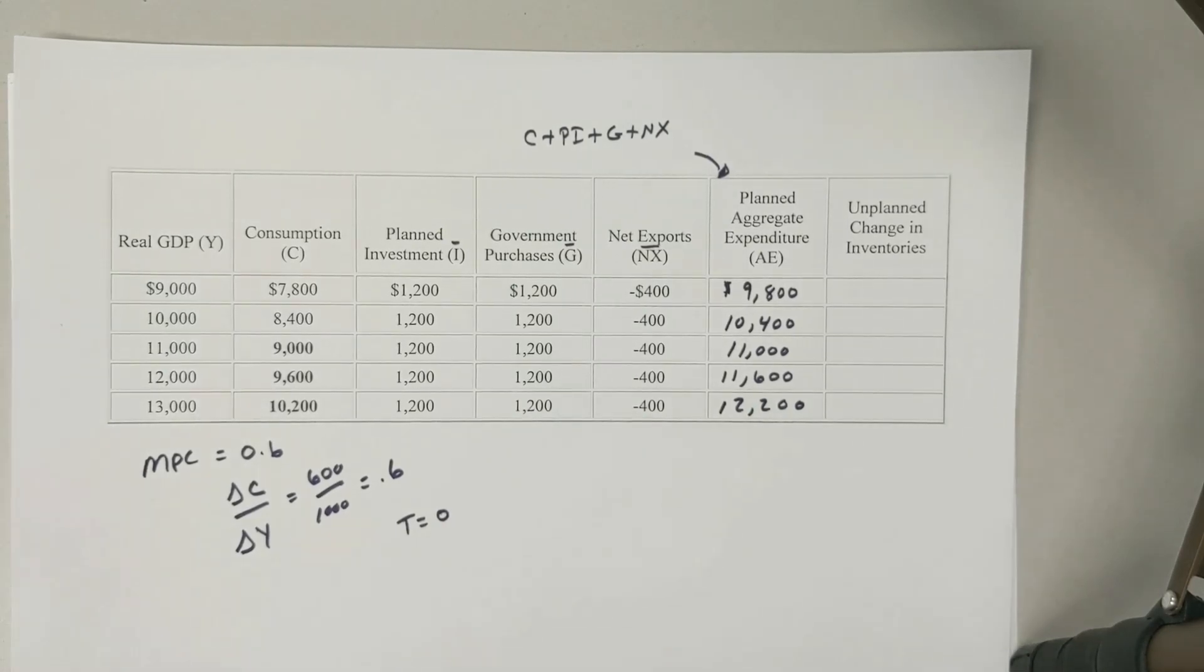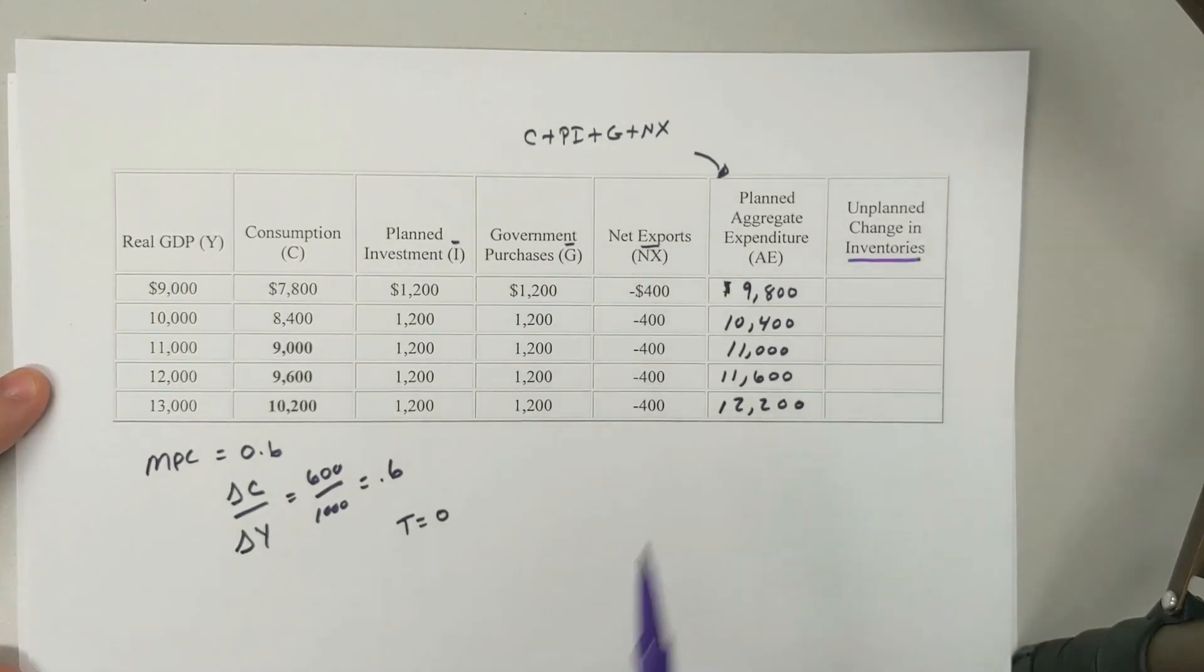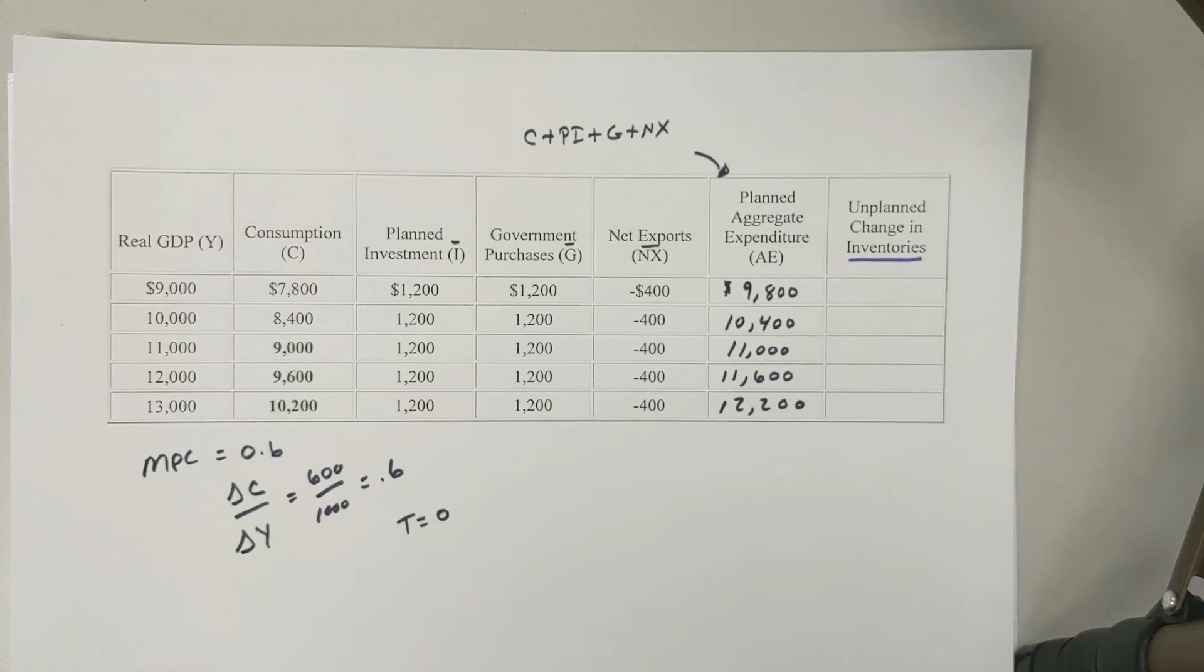The last thing we want to figure out is this unplanned change in inventories. How have inventories changed? Remember that inventories change the following way.